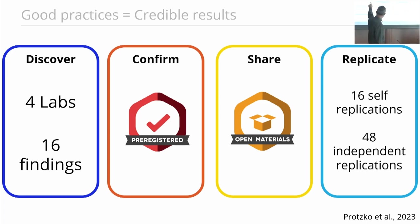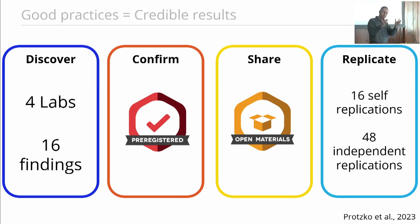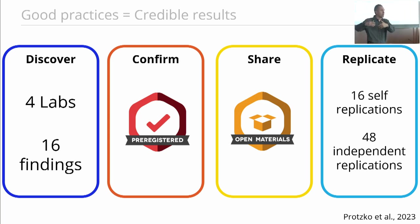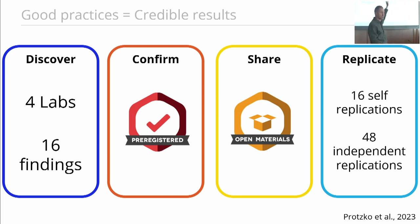Each of the four labs produced four novel findings over this five-year period. The pipeline was: as soon as you think you've got something, you submit it to a large-scale confirmation study — large sample, precise estimate, pre-registered so that you know exactly what your planned design is. Once you have those findings, you share all of your methodology so that the next team can do an independent replication. Each of the four labs did independent replications of each other, trying to adopt all of these best practices that methodologists had been advocating for years.